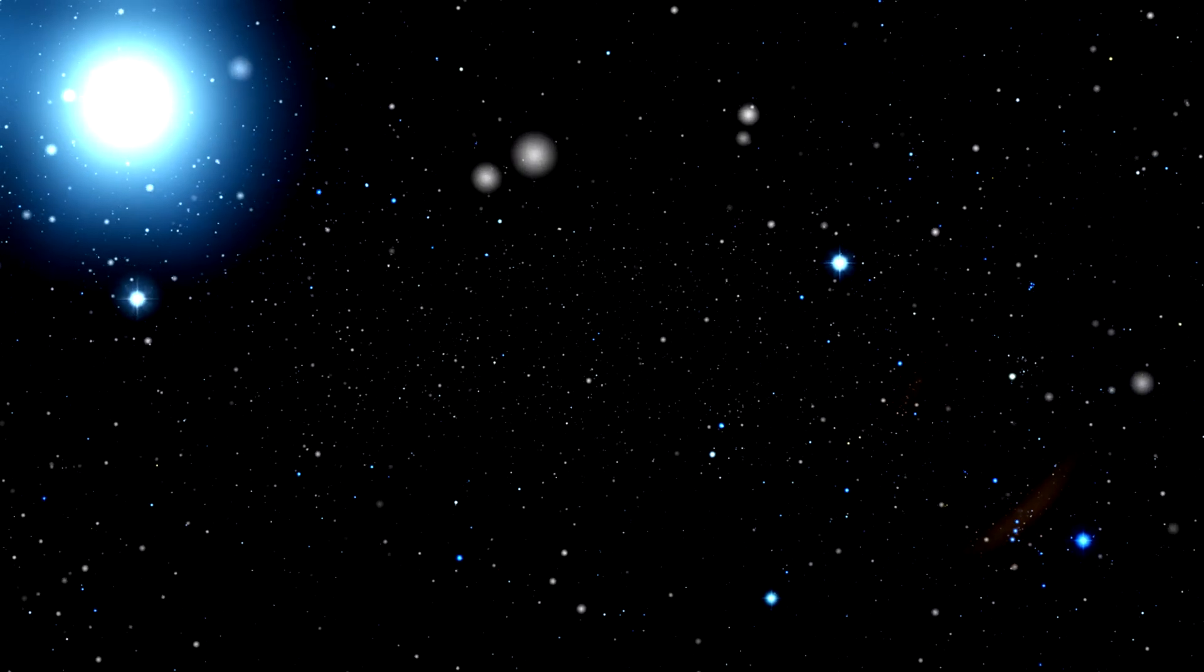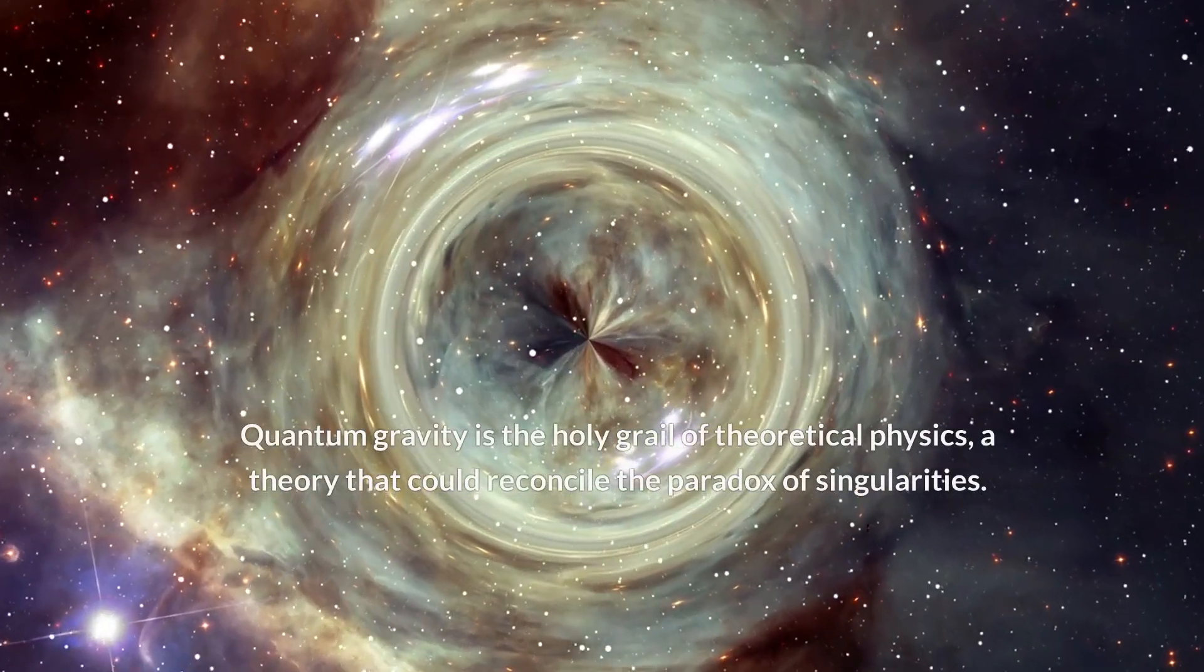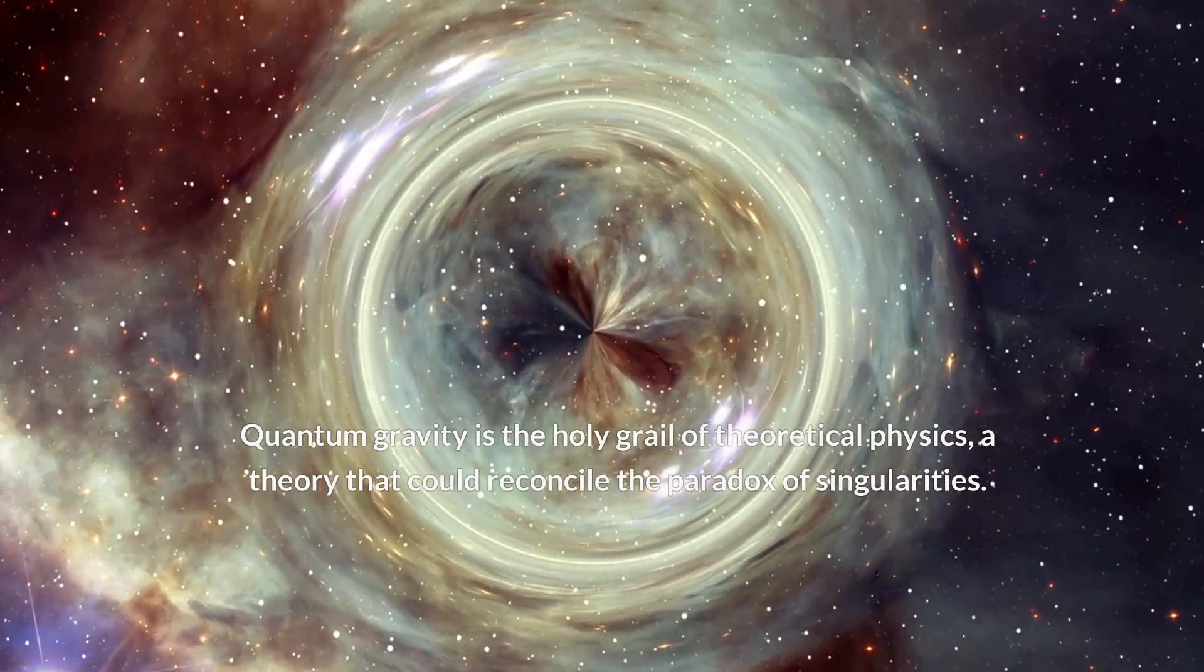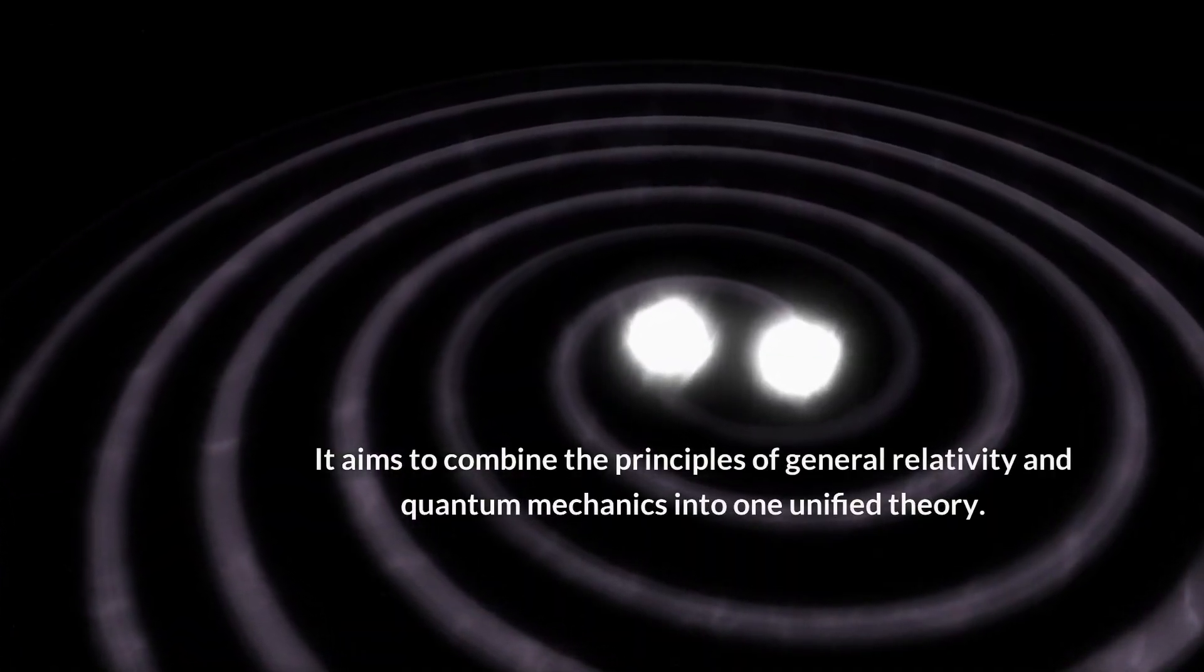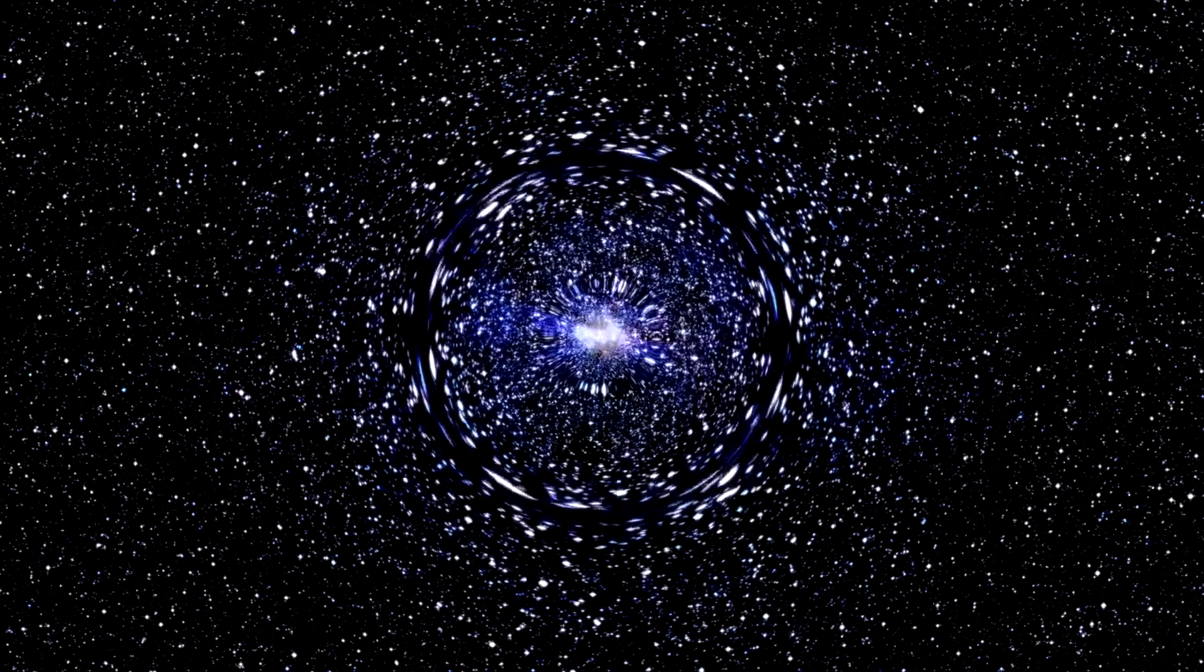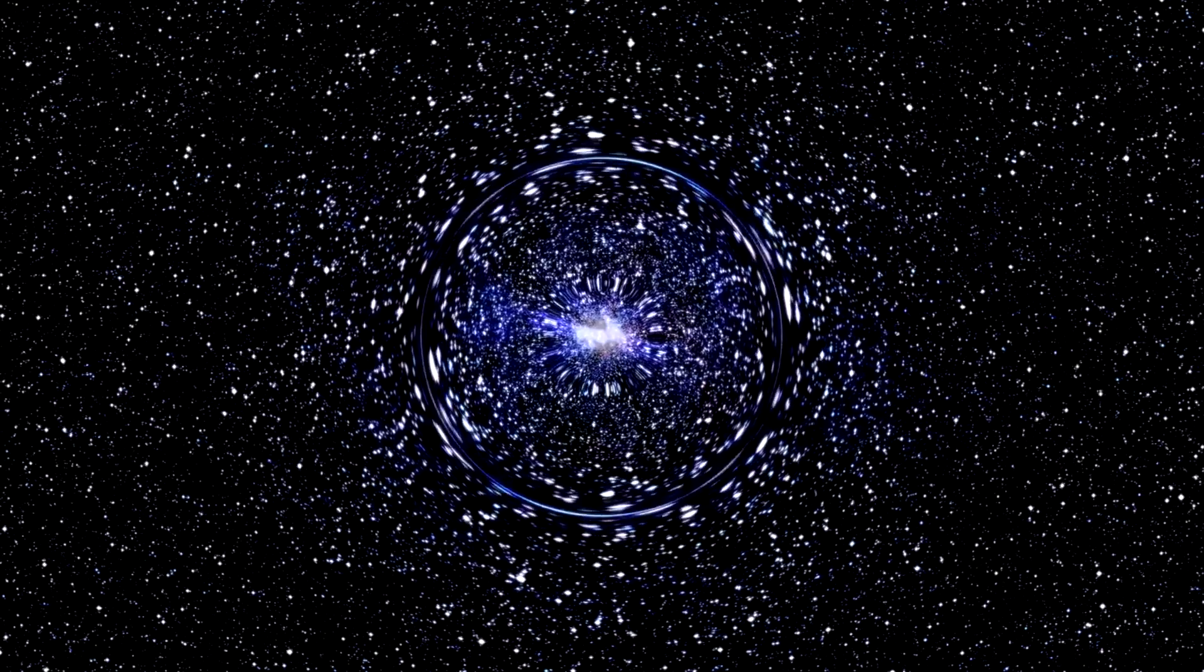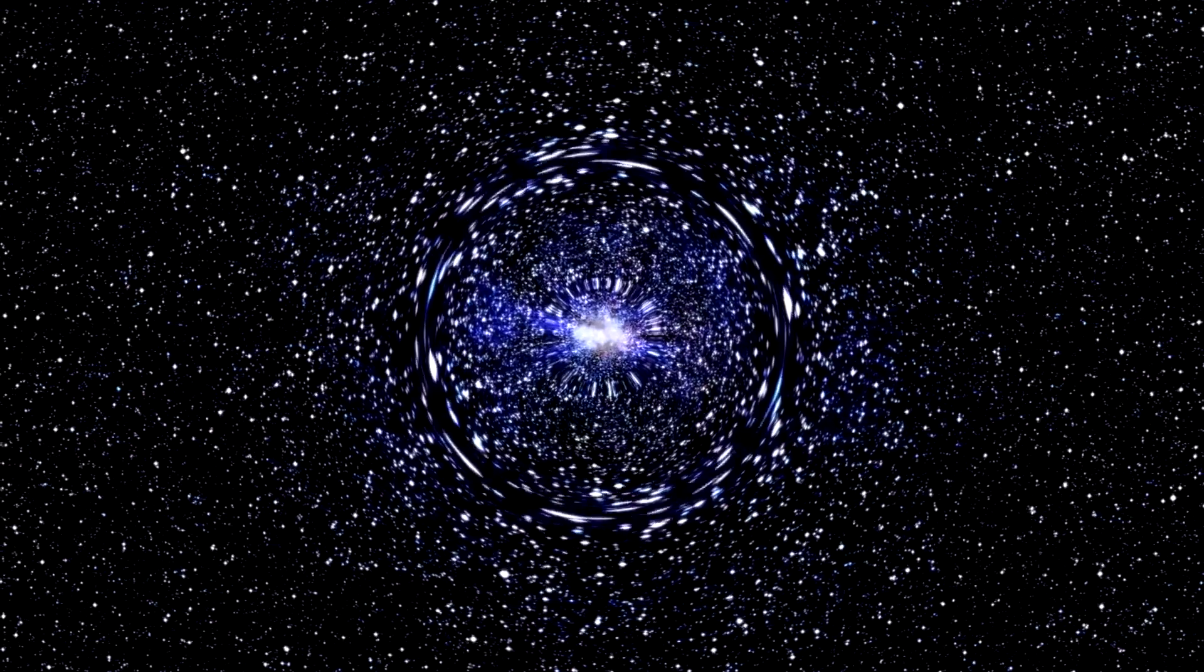This is where the concept of quantum gravity enters the picture. Quantum gravity is the holy grail of theoretical physics, a theory that could reconcile the paradox of singularities. It aims to combine the principles of general relativity and quantum mechanics into one unified theory. In this theory, the effects of quantum mechanics would smooth out the singularity, removing the infinities and making it possible to describe these strange points in space-time.